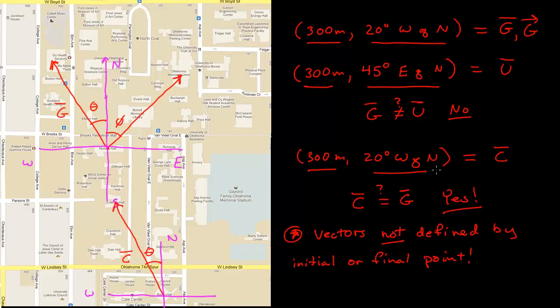If they have the same magnitude and the same direction, then those vectors are equal. And that's important because it lets you translate vectors or move them around on your map or page or coordinate system. If I take this vector C and translate it up to where G was, I get exactly the same vector because they're independent of where they start or stop.